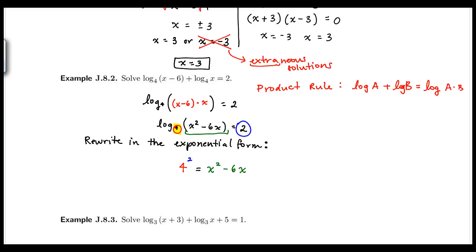Rewriting the log equation in exponential form gives base 4 to the exponent 2 equal to x squared minus 6x. This becomes a quadratic equation, and I have 16 equal to x squared minus 6x. Because of the x squared, I need to get 0 on one side, factor, and use the zero product property to find the solutions.